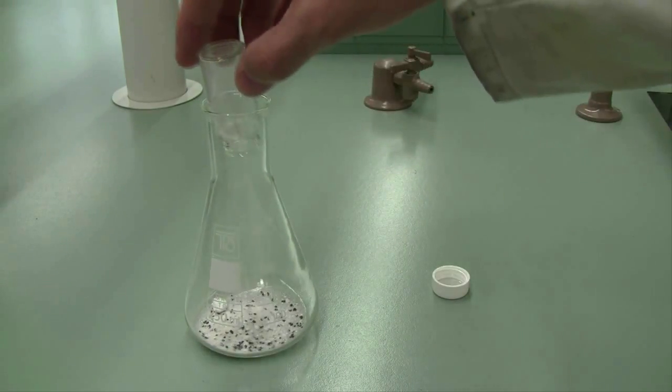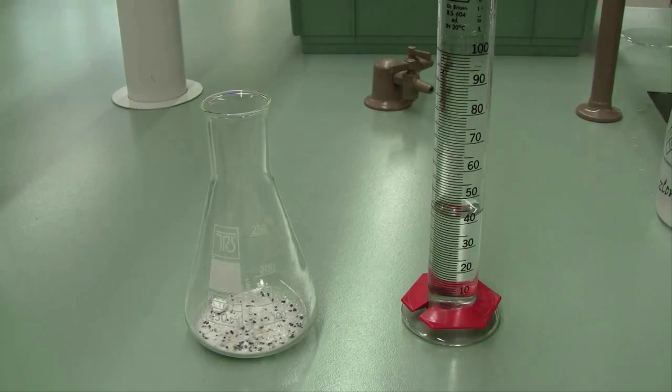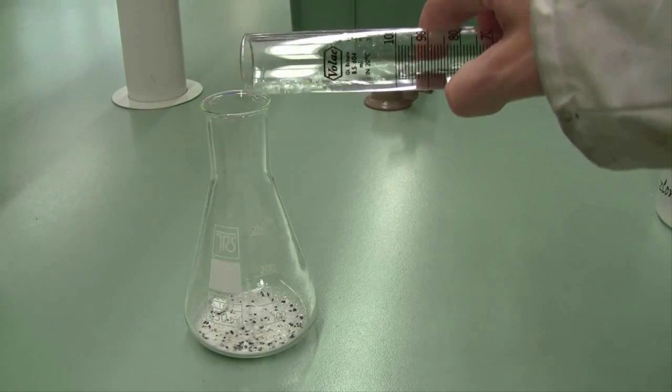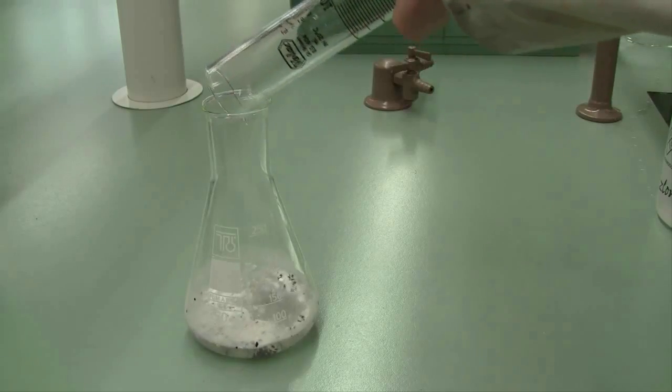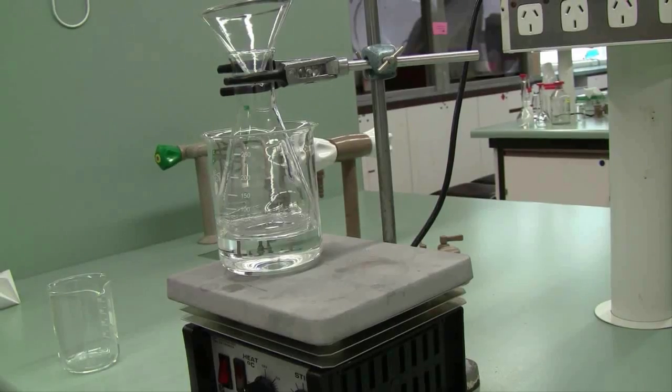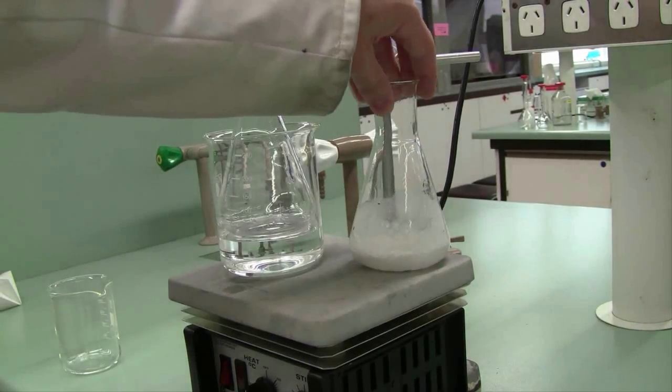Take your impure sample for recrystallization and put it into another clean conical flask. And then, using a measuring cylinder, add approximately 40 ml of distilled water. This will be the solvent used to dissolve your crystals. Place that on your hot plate.